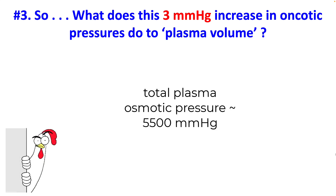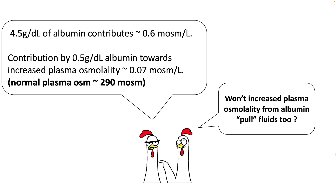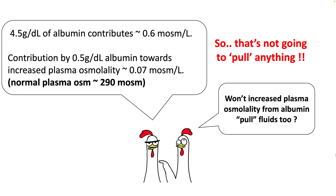Understand that the total plasma osmotic pressure is on the order of 5500 mmHg. The common thought is that the increase in plasma osmolality from albumin will pull fluids into your intravascular compartment. However, 4.5 g/dL of albumin contributes only 0.6 milliosmol, so the contribution of that extra 0.5 g/dL is going to increase your plasma osmolality by only 0.07 milliosmol per dL — which is really nothing. So if you calculate, you will possibly not be able to pull more than a few cc's. So let's see what's really happening.